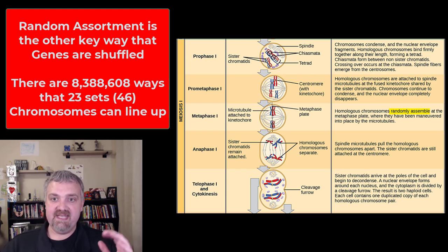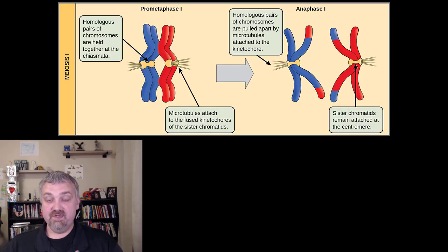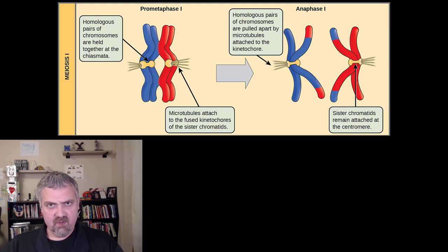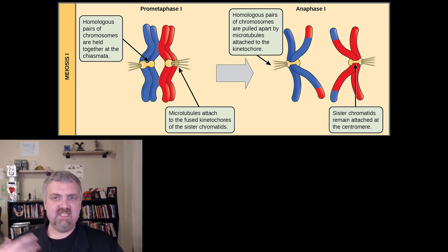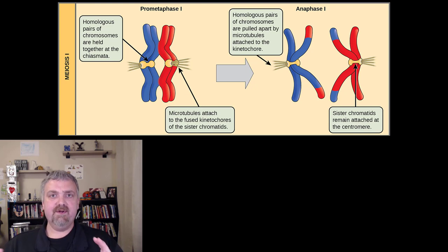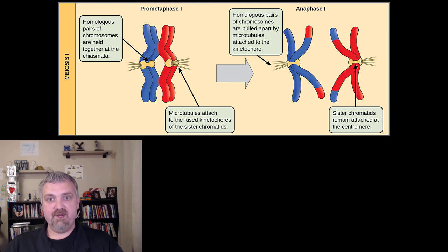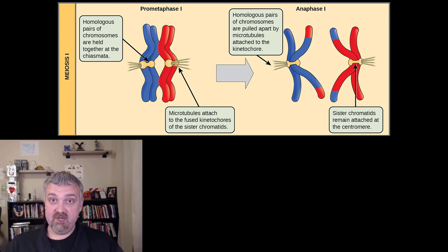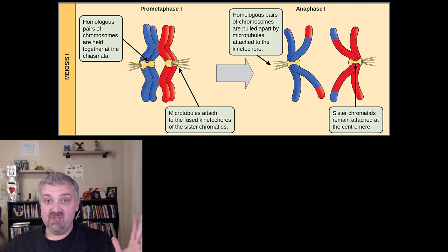So that's going to be during meiosis one — those are the key things that are happening there. Crossing over and random assortment are the two key reasons that you have so many unique sperm or so many unique eggs. The third thing that makes it so random that you are you — besides crossing over and random assortment — is which sperm reached which egg. If a different sperm reached that egg, or your mother got pregnant a month later with a different egg, you wouldn't be here because of these unique combinations.